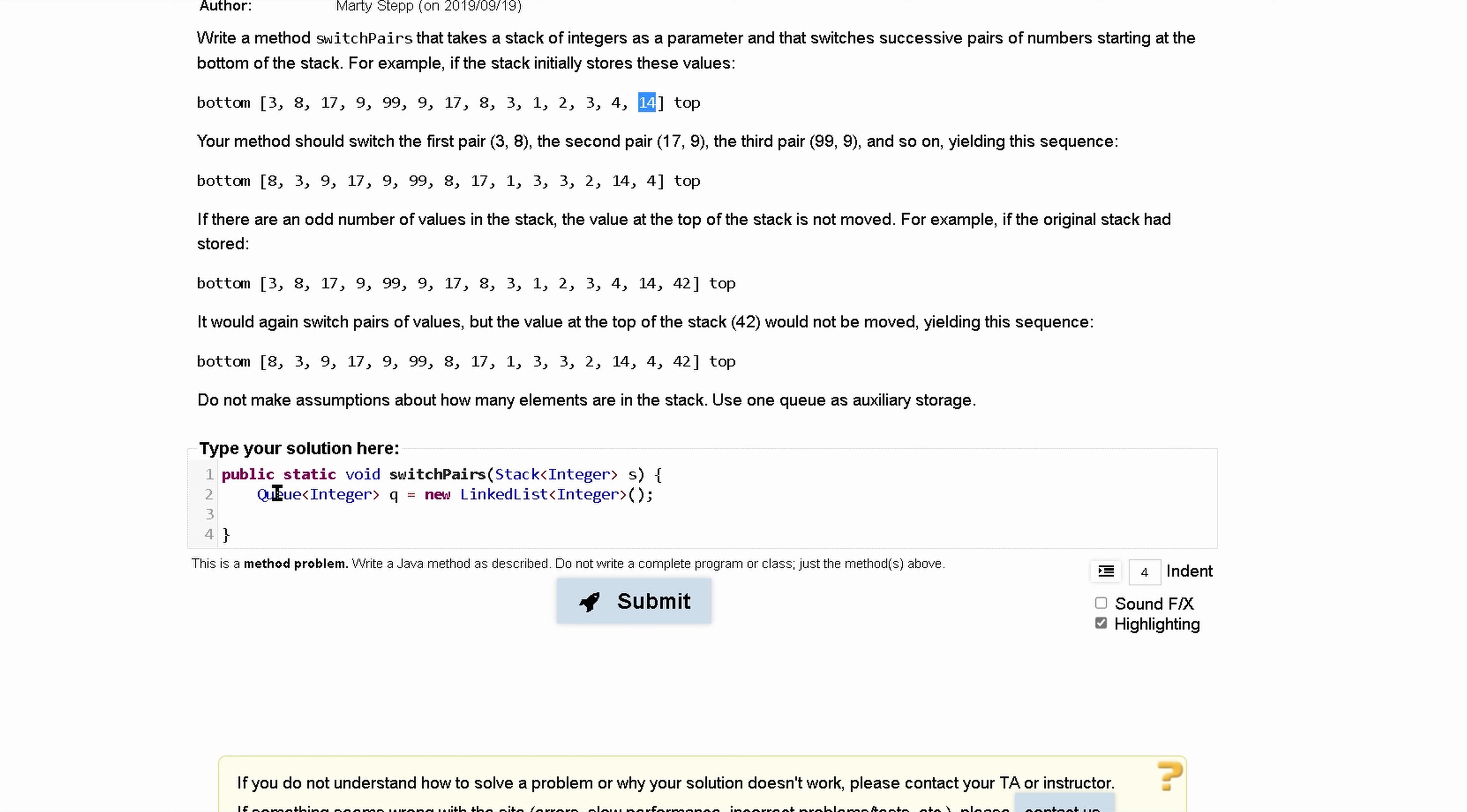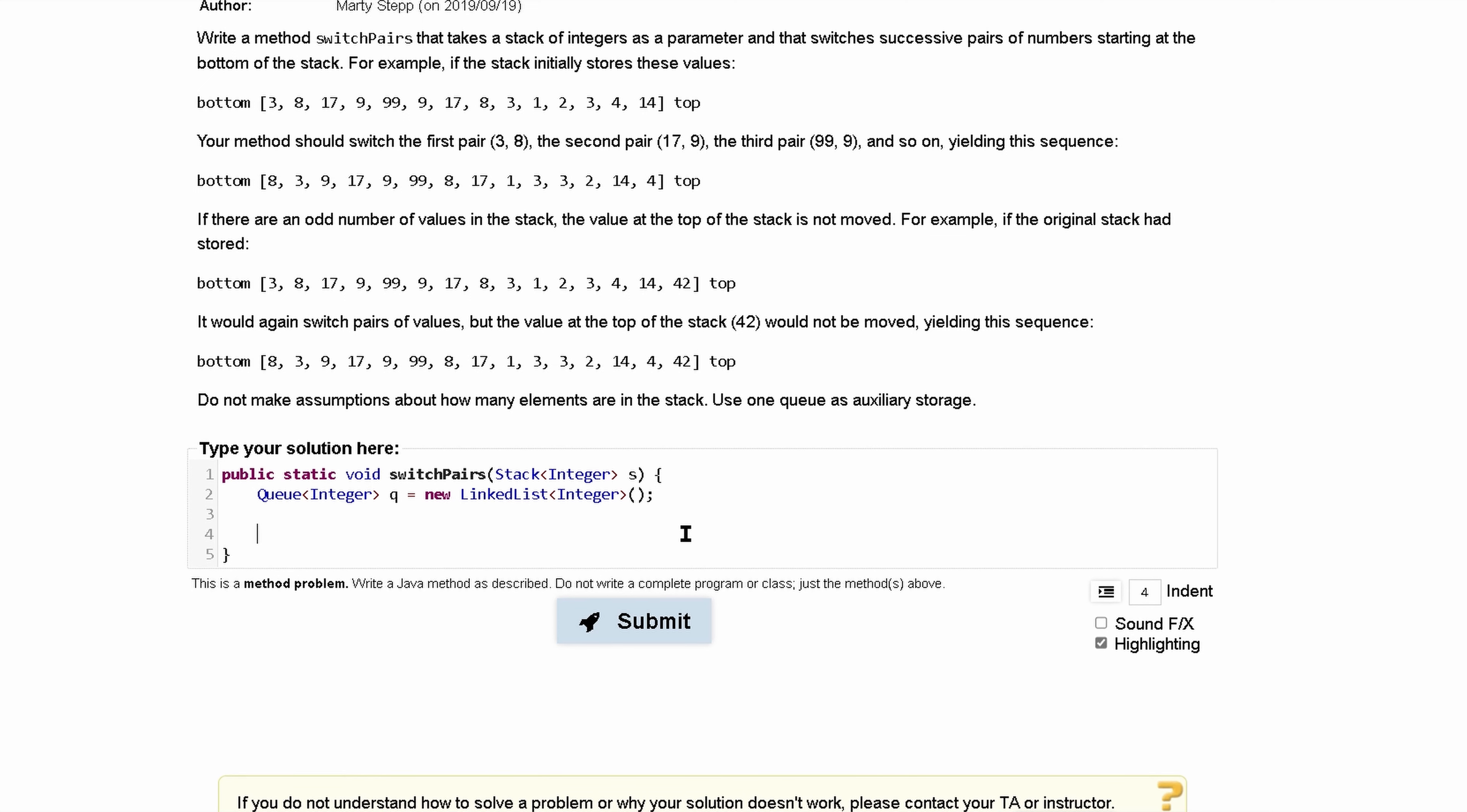Because if we just take from the queue and put it back into our stack, well, this is going to be reversed. But this 14, assuming it is odd, I think this one's odd. So this 42 would be left alone.